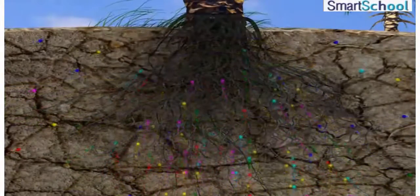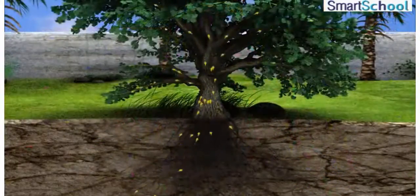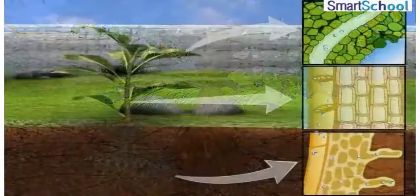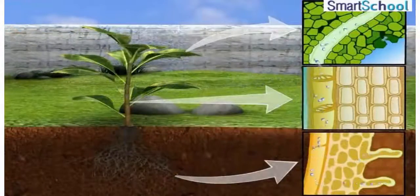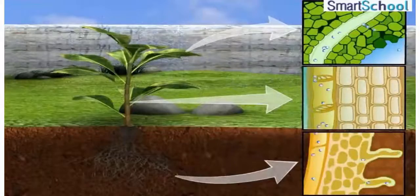The transportation of water and minerals takes place with the help of vessels which run like pipes throughout the root, the stem, the branches and the leaves. They form a continuous path or passage for the nutrients to reach the leaf.